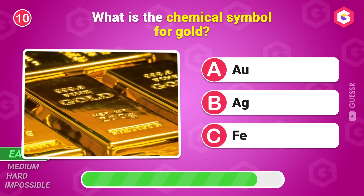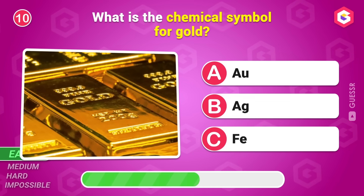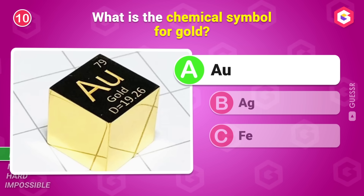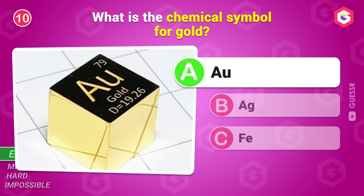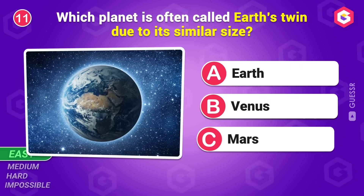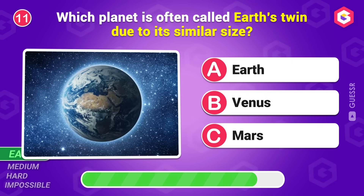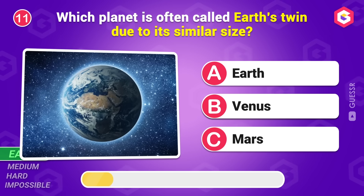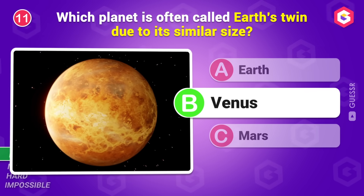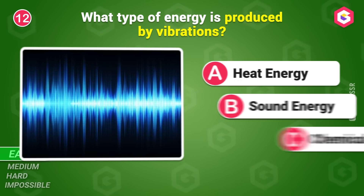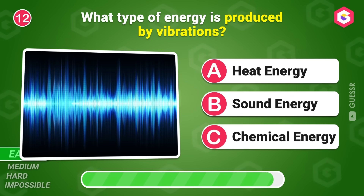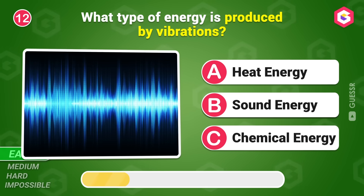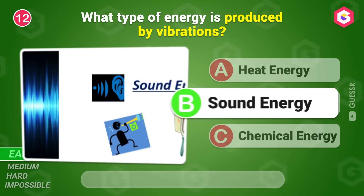What is the chemical symbol for gold? AU. Which planet is often called Earth's twin due to its similar size? Venus. What type of energy is produced by vibrations? Sound energy.